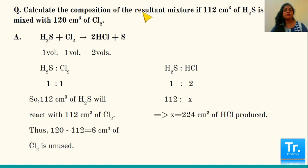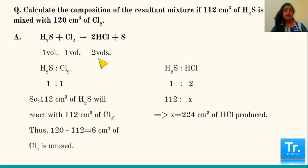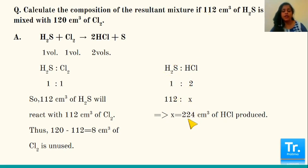For H2S to HCl, the ratio is 1:2. So 112 cm³ of H2S produces 224 cm³ of HCl. The resultant mixture is 8 cm³ of chlorine unused and 224 cm³ of HCl produced.